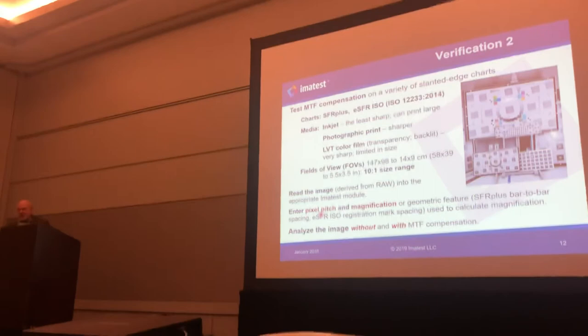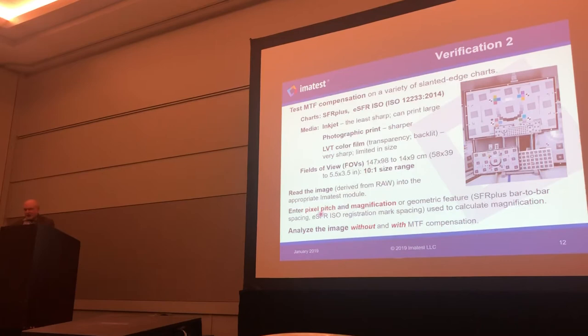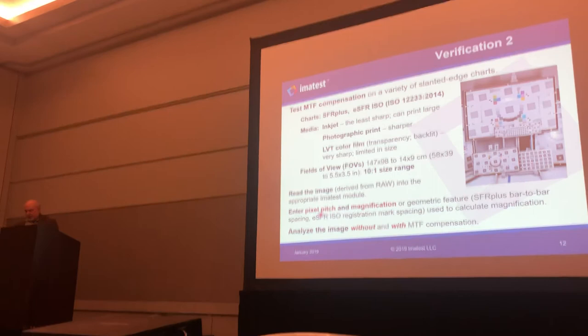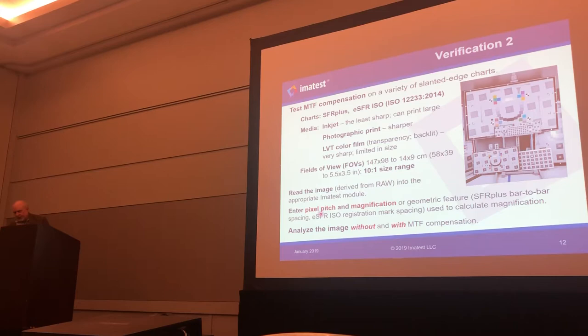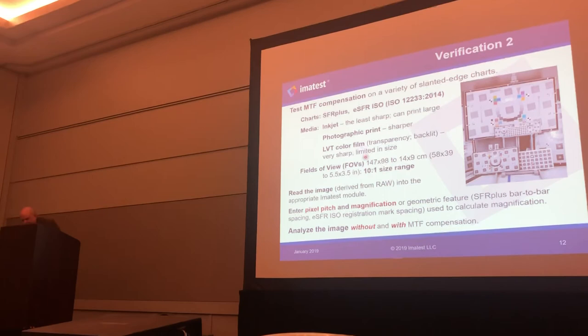We ran the tests on a collection of test charts that were in the test lab — charts printed over several years and used for various purposes, so new ones and old ones, done with different printers, some of them probably more than five years old. The charts are two different models: the ESFR, which is the ISO 12233 2014 enhanced version; we also did photographic prints and the LVT color film, which is made on a laser drum scanner — a very fine process that turned out to be even better than we expected. The fields of view ranged over a 10-to-1 size.